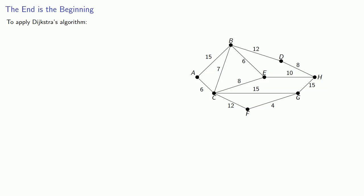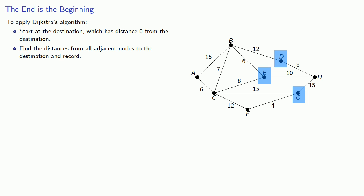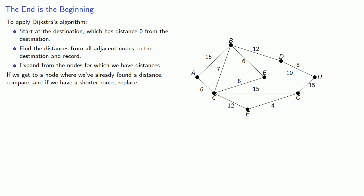To apply Dijkstra's algorithm, we'll start at the destination, which is distance zero from the destination. Next, we'll find the distances from all adjacent nodes to the destination and record. Then expand from the nodes for which we have distances. If we get to a node where we've already found a distance, we'll compare our distances and if we have a shorter route, replace. Once we've checked all edges leading to a node, we'll mark it as visited.